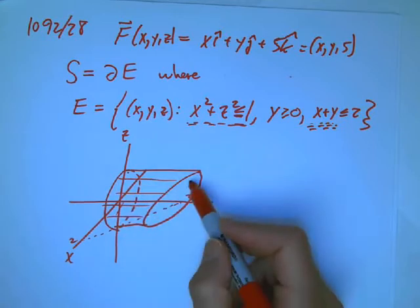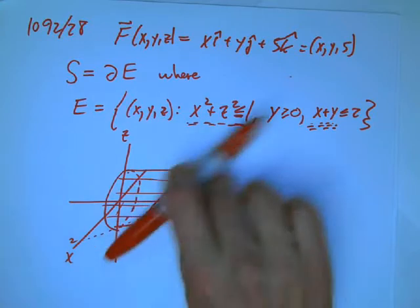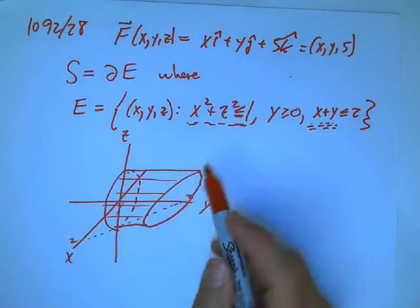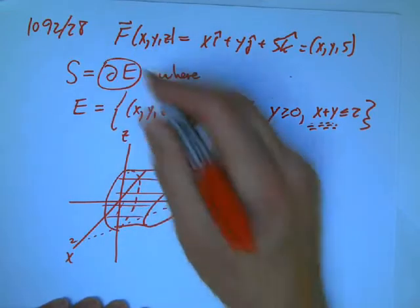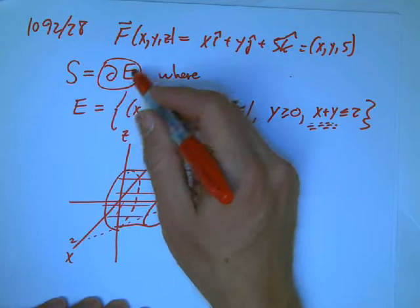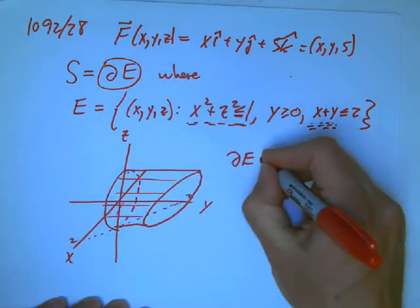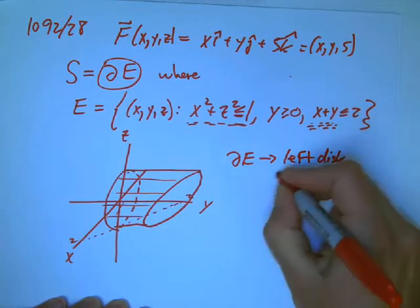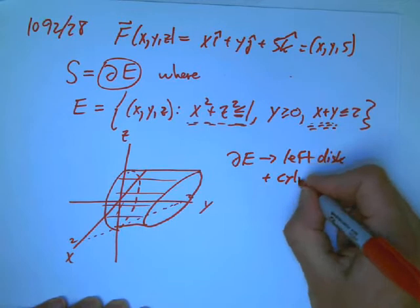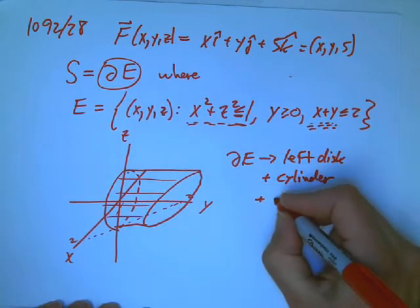So the boundary of that is complicated enough to think about. The boundary of E is going to be that left disc and the cylinder, cylindrical wall, but of course it's got a kind of a weird place to stop, plus the right elliptical region.